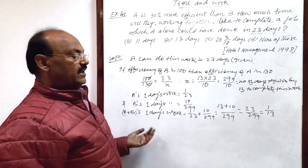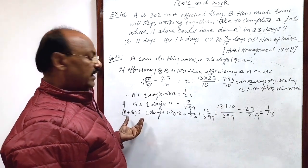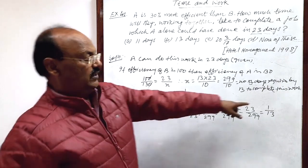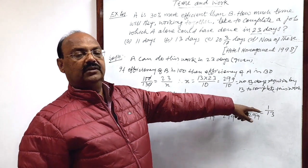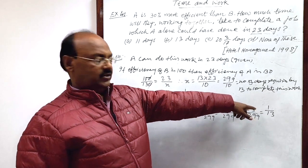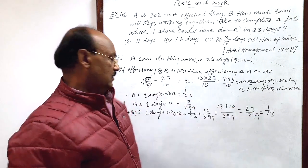So number of days required to finish this job when A and B are working together will be reciprocal of this much. That is 13. This we can understand or we can do by unitary method also.